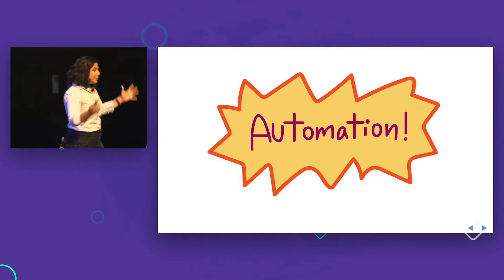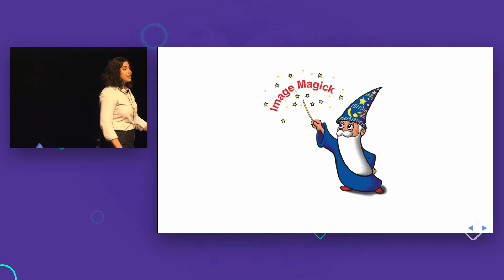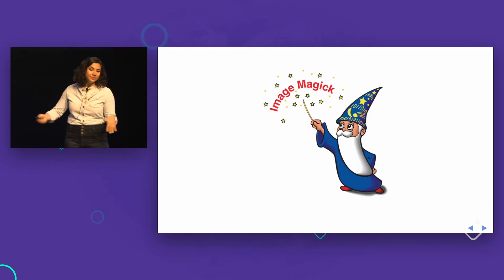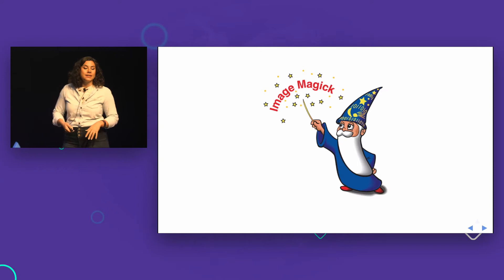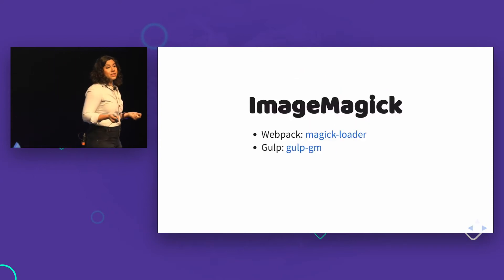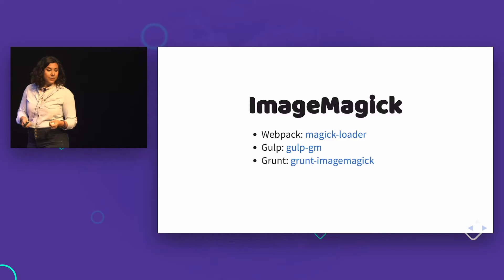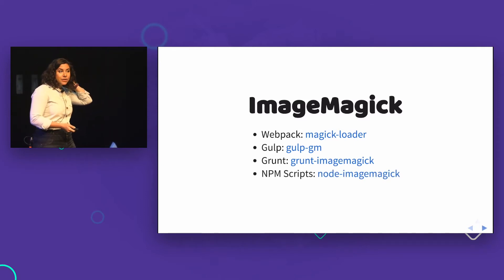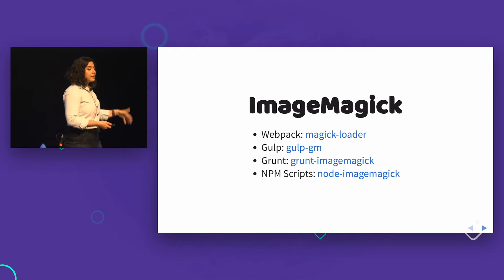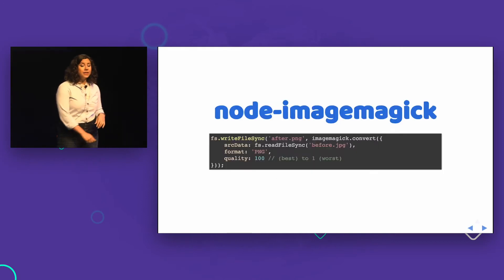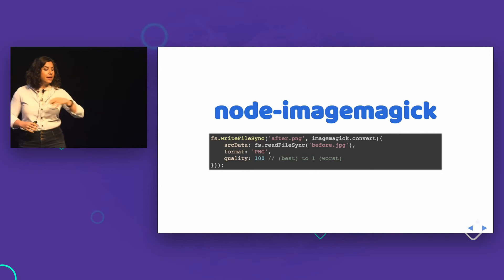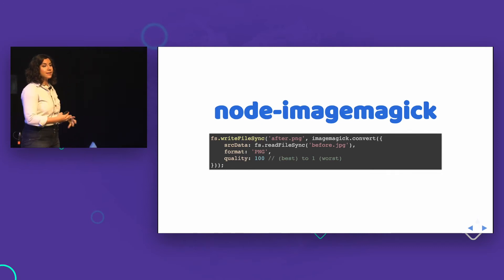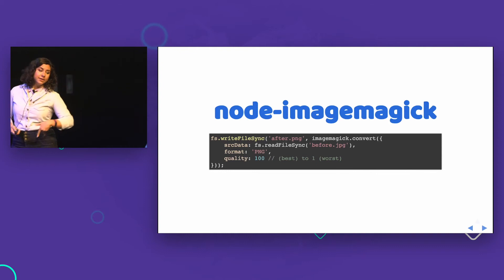The first thing we can do is totally automate our images. You can use ImageMagick in whatever way your development environment is set up — write it once and you're done. With Webpack, there's magic-loader. With gulp, there's gulp-gm (graphics magic). With grunt, you have grunt-imagemagick. And then you can write npm scripts directly with node-imagemagick as a wrapper. You can specify your input, your output, say converting JPEGs to PNGs, and accept the quality. It's super customizable — write it once and you're good to go.